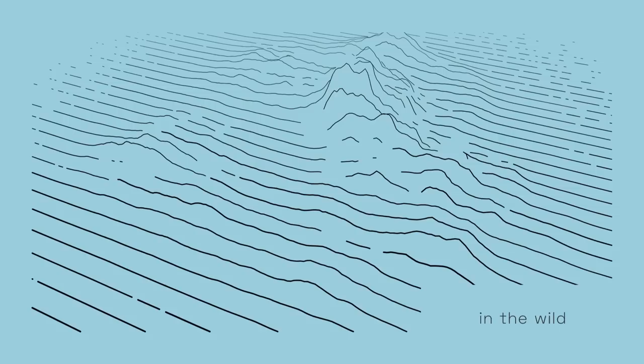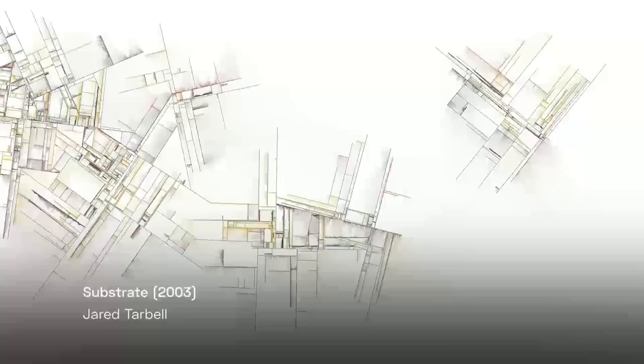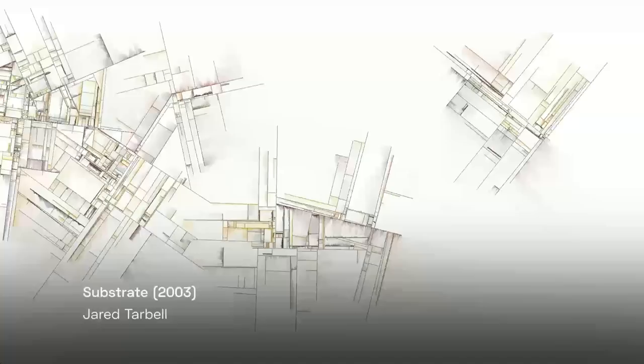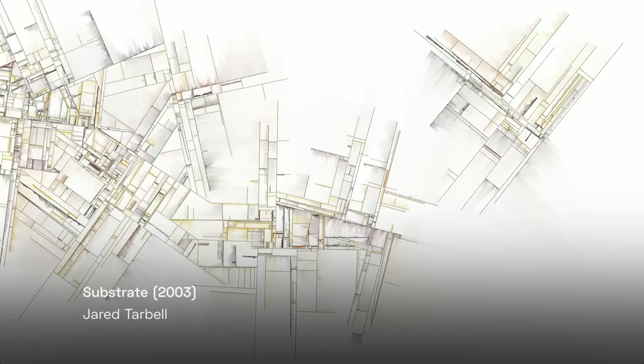I'll start by talking about some projects I'm really inspired by and the different types of things you can see in generative art and creative coding. This one's called Substrate by Jared Tarbell. The idea is really simple: you draw lines extending outwards to infinity, but when they collide with other lines it creates a new line at a perpendicular angle. With that simple set of rules you get really complex and intricate results. Every time it runs it produces something unique and totally different than anything it's produced before.